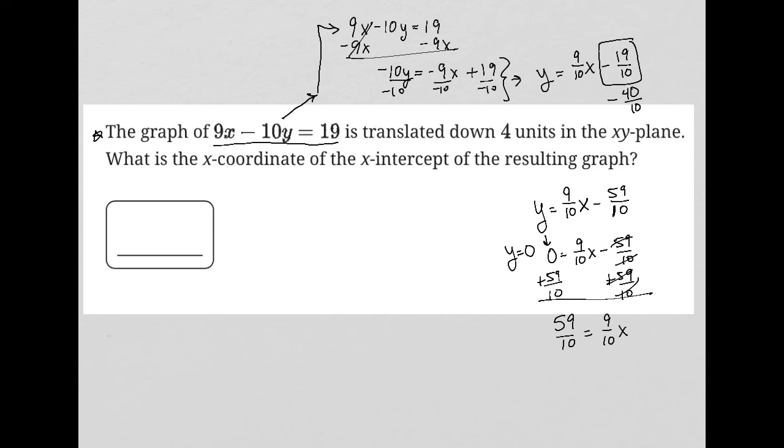I can multiply both sides by 10/9 to isolate the x value. The tens cancel, the nines cancel. I'm left with 59/9 equals x. So there is my x-coordinate of the x-intercept.